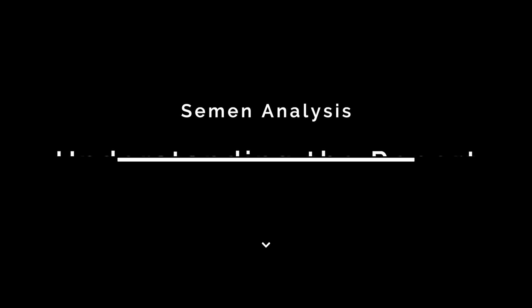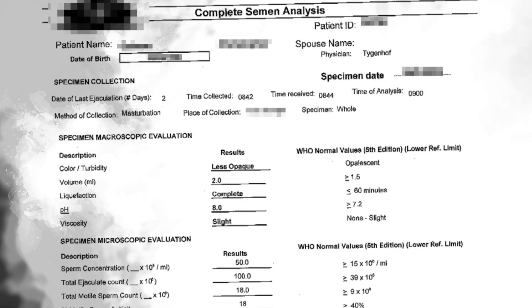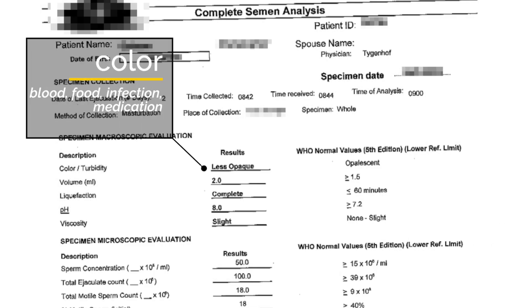Sperm are the swimmers. Semen is the liquid. Not all semen has sperm, but all sperm is in semen. The first thing we see is the color. Certain discolorations could suggest blood or infection. Certain foods and medications can also cause a change in color. An abnormal color may mean some additional tests are needed, such as PSA testing, urine testing, or culture of the semen.